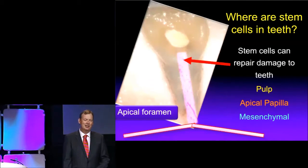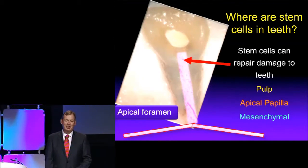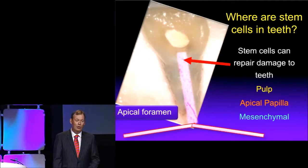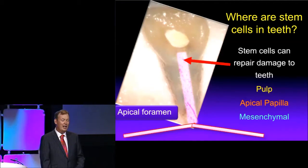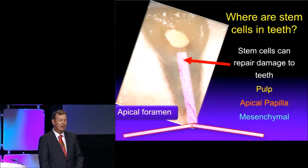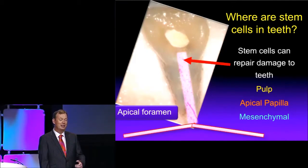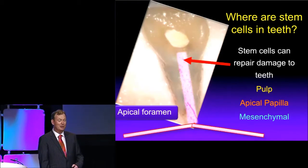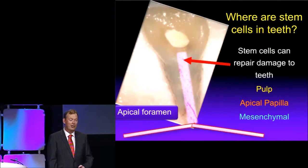So where are these stem cells that are in teeth? Well, of course, in the developing tooth with an open apical foramen, those dental stem cells are in the pulp tissue. We think that they come from the pulp, and we think they come from bone marrow, which produces millions of cells in your body. We also think that they may be mesenchymal cells, and they could also come from apical papilla tissues.